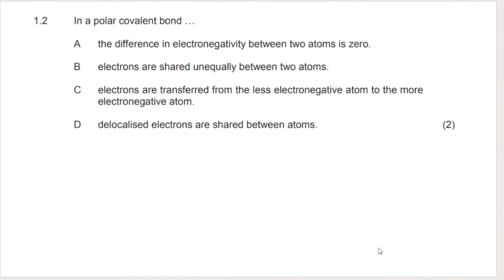In a polar covalent bond, the difference in electronegativity between two atoms is not zero — that would be a nonpolar covalent bond. The correct description is that electrons are shared unequally between two atoms. Option C is wrong — transfer of electrons from less electronegative to more electronegative describes an ionic bond, not covalent. Option D is wrong — delocalized electrons are not the defining feature here. The answer for 1.2 is that electrons are shared unequally.